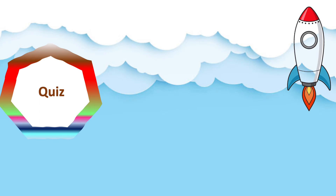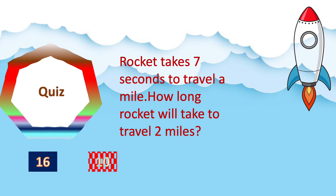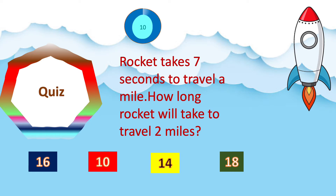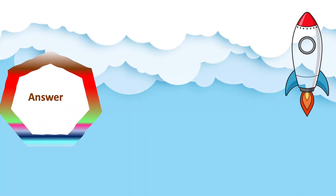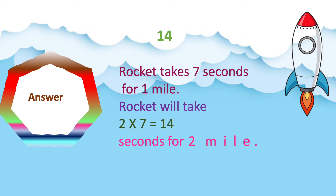The next question: A rocket takes 7 seconds to travel a mile. How long will the rocket take to travel 2 miles? The options are 16, 10, 14, and 18. The correct answer is 14. The rocket takes 7 seconds for 1 mile, so for 2 miles: 2 × 7 = 14 seconds. Great job!